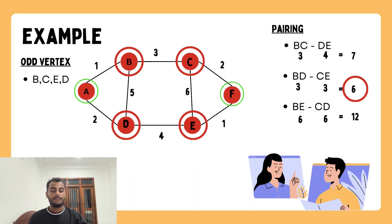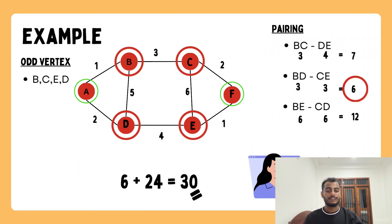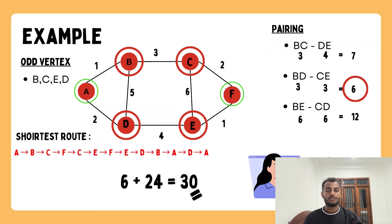We add the minimum pairing cost of 6 to the total edge weight of 24, giving a total route cost of 30. So the Chinese postman problem is solved. The shortest route is: A→B, B→C, C→F, F→C, C→E, E→F, F→E, E→D, B→D, D→B, and B→A.